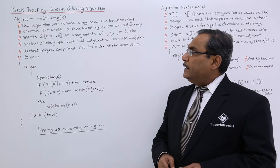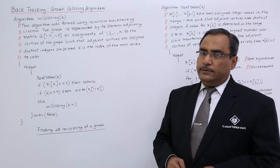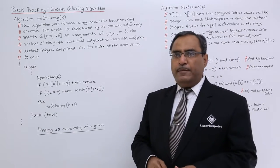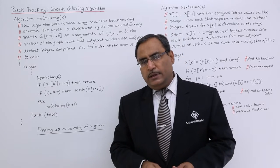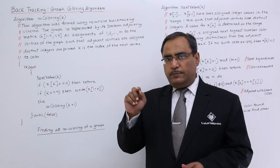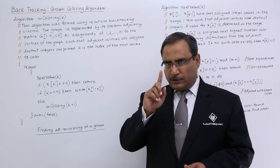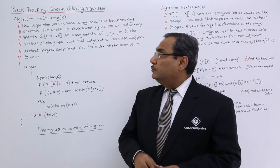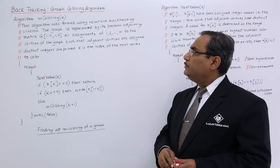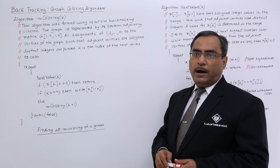m-coloring algorithm: m-coloring(k). When this particular m-coloring is called for the first time from the main function, it will be called as m-coloring(1), so it will go for the first node. This algorithm is formed using a recursive backtracking schema.